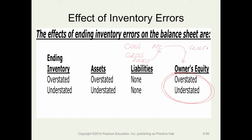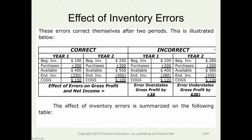To summarize, let's look at the effects on two accounting periods. The correct results show: beginning inventory of 100, purchases of 300, goods available for sale of 400, ending inventory of 250, and cost of goods sold of 150. The ending inventory of one year becomes the beginning inventory of the next: beginning inventory 250, purchases 300, goods available 550, ending inventory 450, cost of goods sold 100.